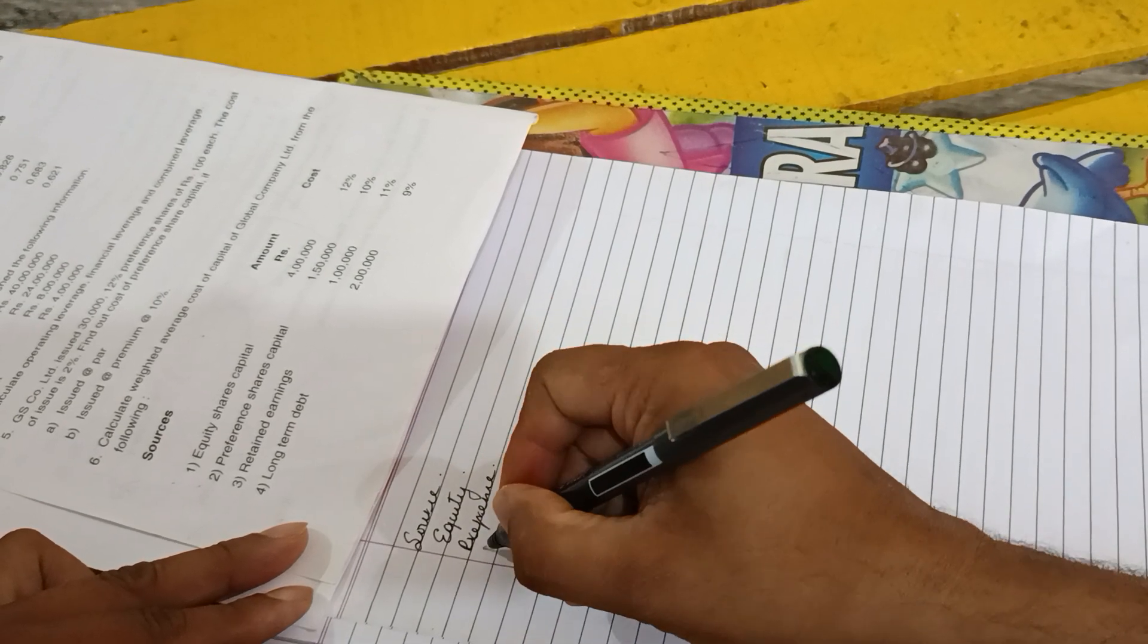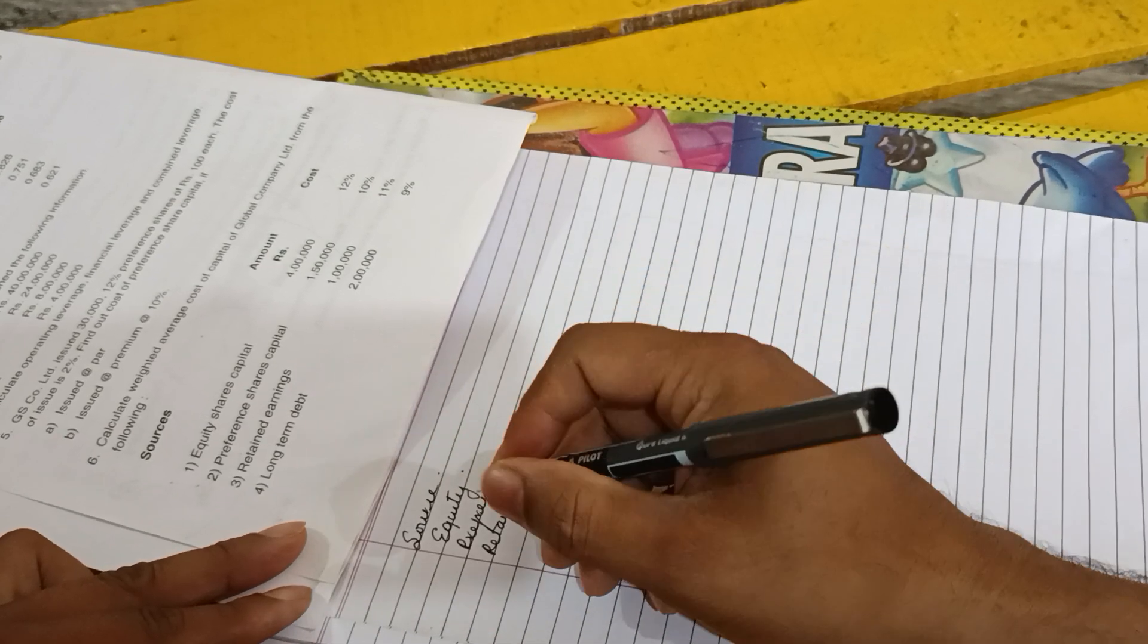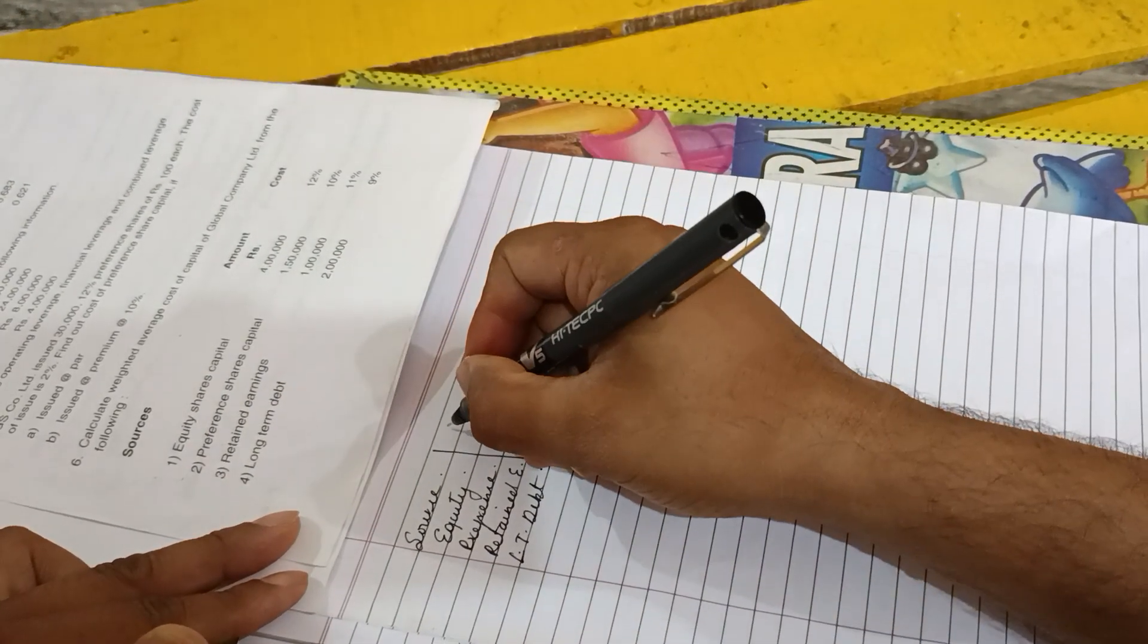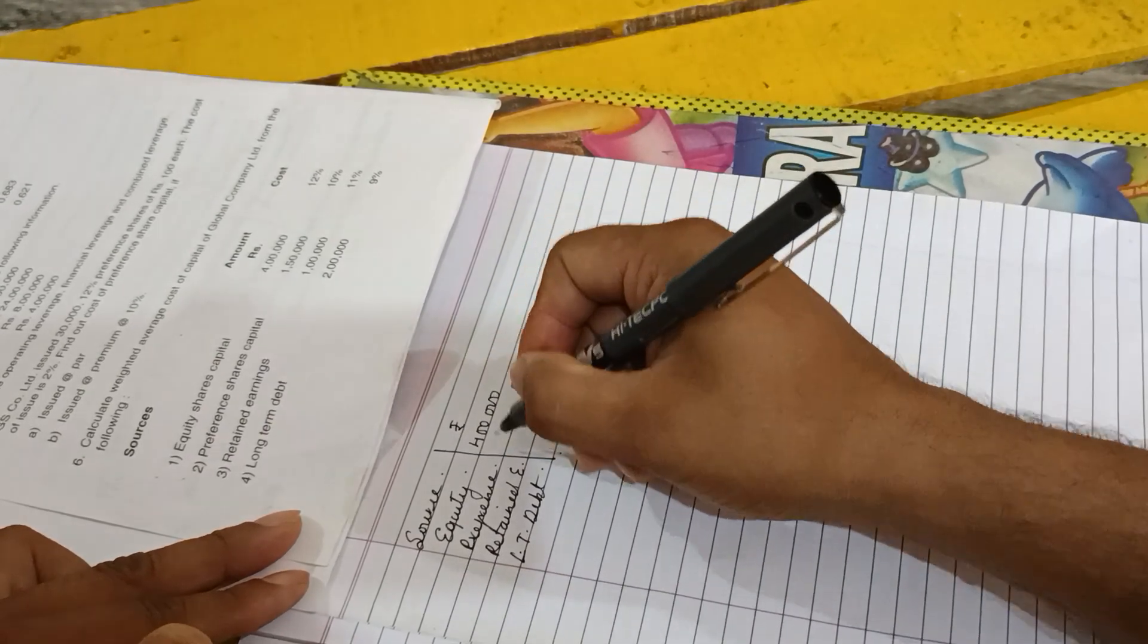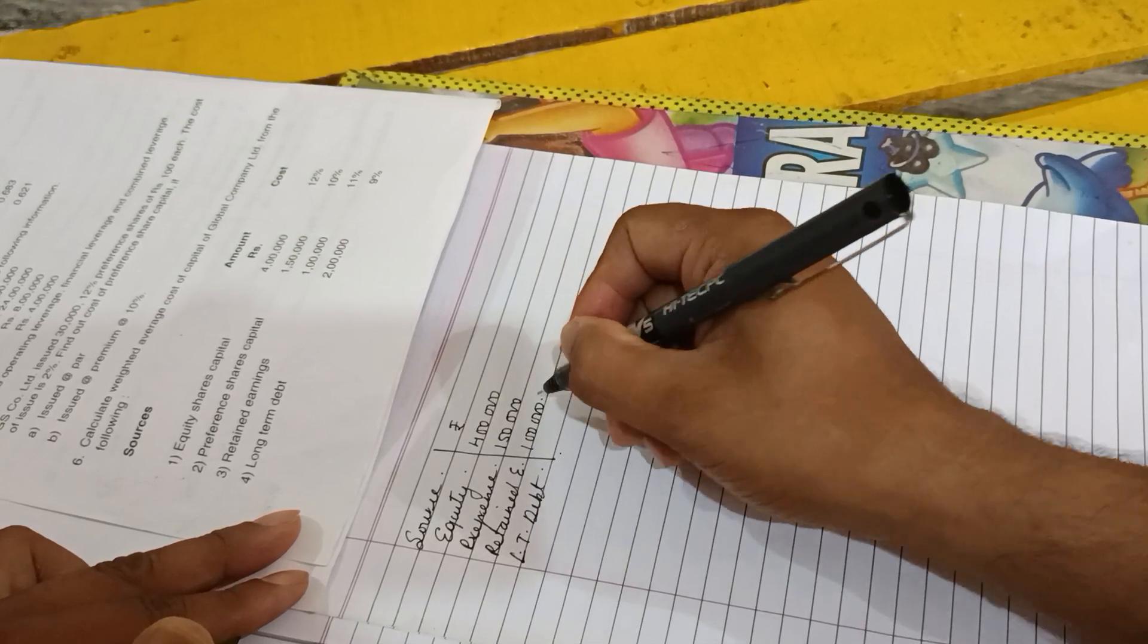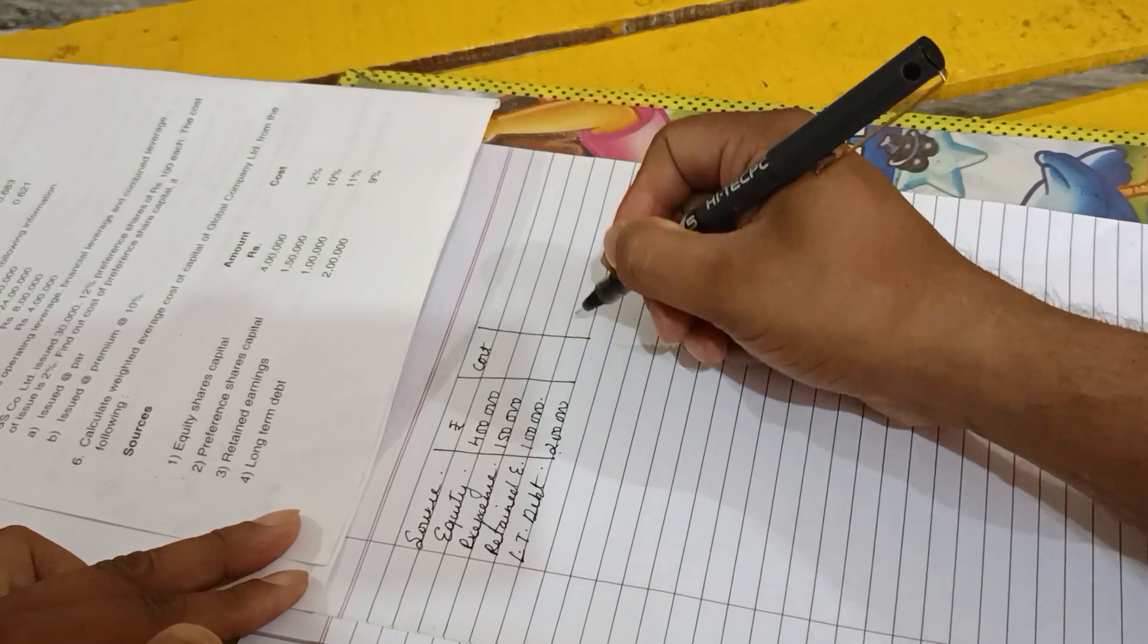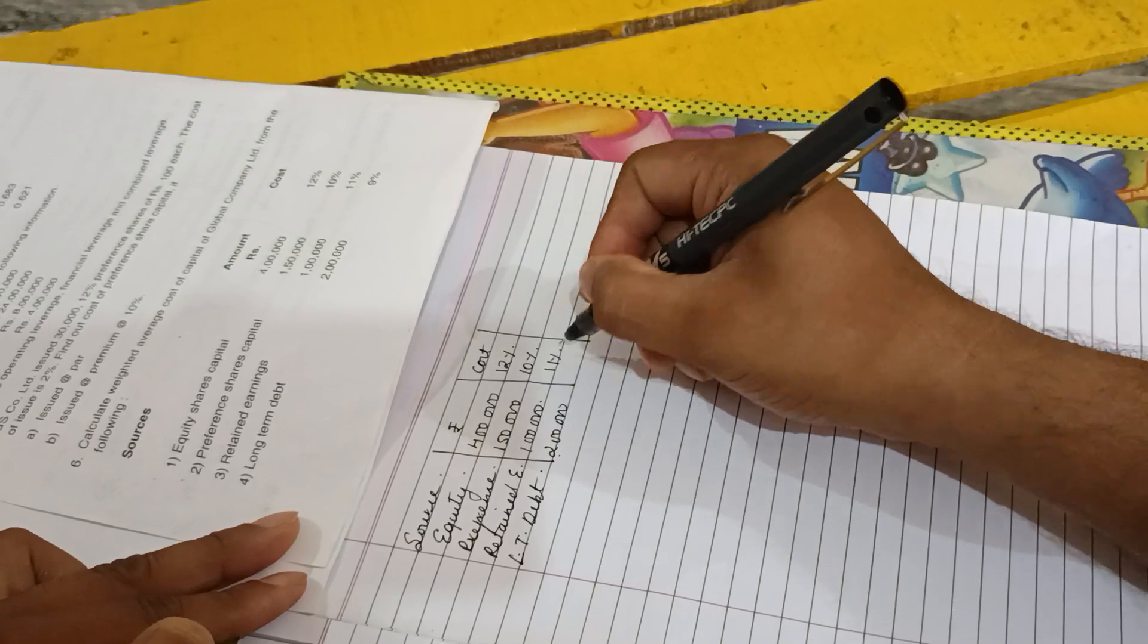The next column is Amount. Amounts are four lakh, one lakh fifty, one lakh, and two lakh. The next column is Cost. Costs are twelve percent, ten percent, eleven percent, and nine percent.